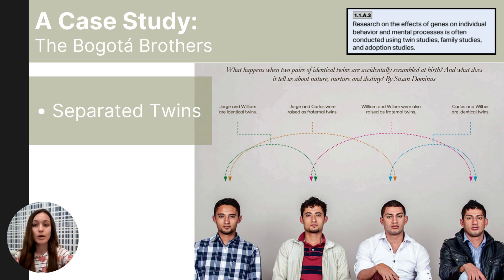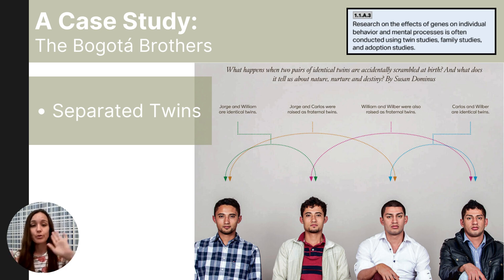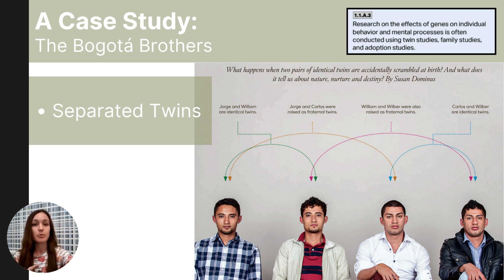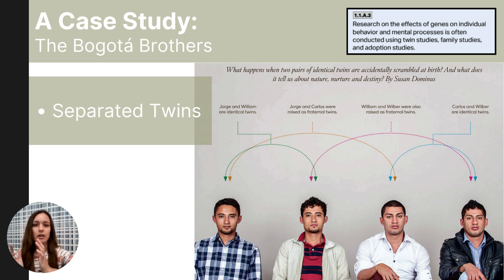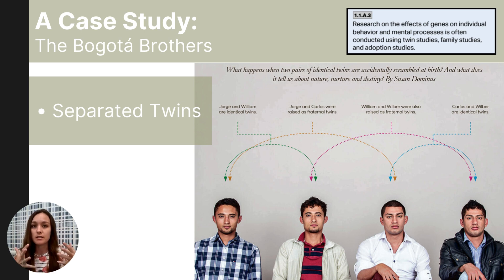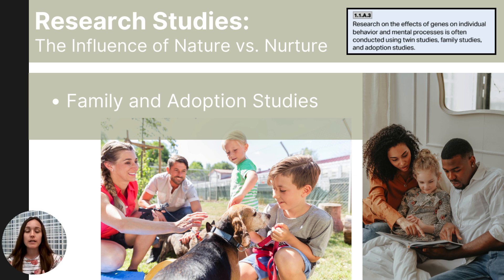Despite their different environments, William and Jorge were both physically strong, supportive, and described as jokesters even though they had not been raised together. The identical twins Wilbur and Carlos, also raised separately, shared the same speech impediment and were both described as serious, moody, prone to crying, but very organized. This story is not unique — other examples of separated twins have shown striking similarities in behavior, interests, and temperaments upon reuniting later in life. While these case studies are fascinating, they are anecdotal, and conclusive statements about causality require controlled settings, though twin researchers still find this valuable to the discussion of nature versus nurture.